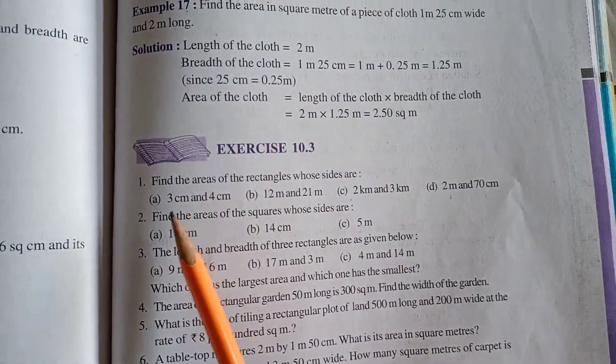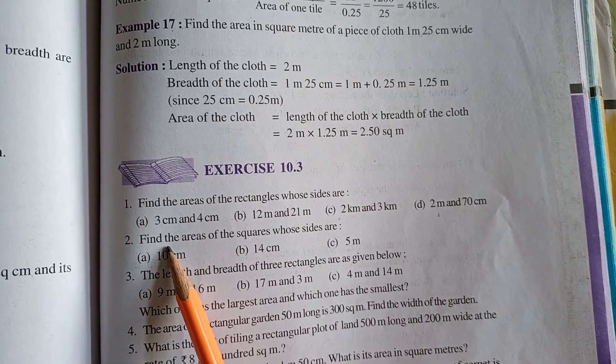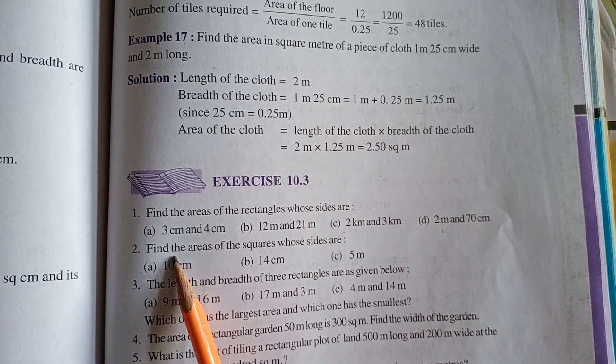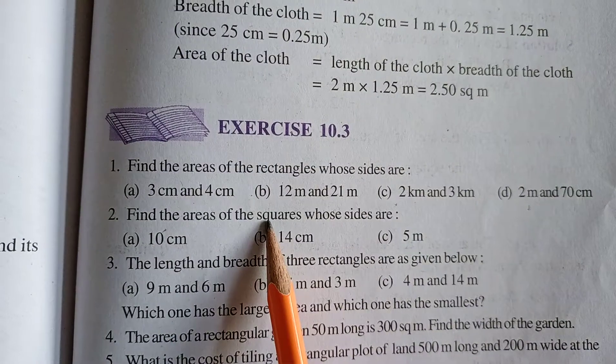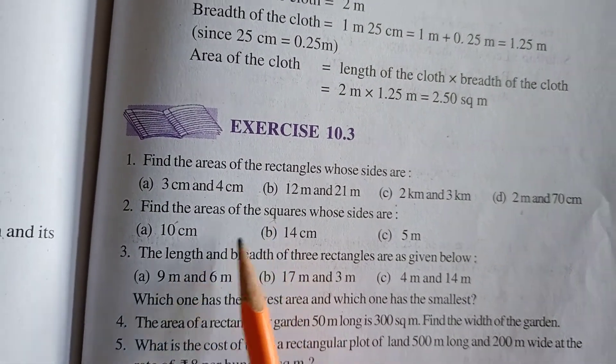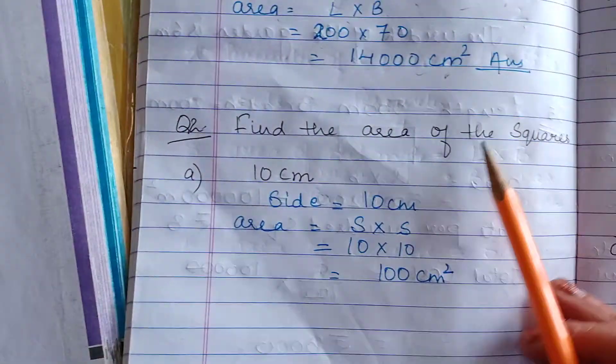Let's move ahead with question number 2 now. Find the area of the squares. Again we have to find the area but this time the figure is changed. It is square now. Let us do part A.